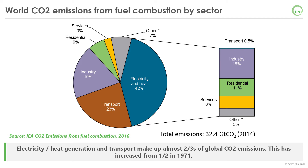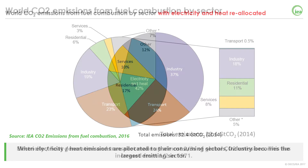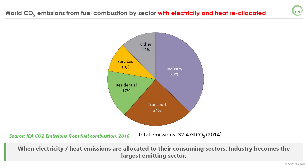However, electricity and heat are generated to meet a demand. You can see the share of electricity and heat demand on the right. Therefore, we can reallocate the emissions of this sector into the respective final consumption sectors. Once reallocated, industry appears to be the largest emitting sector. This can be explained by the very large demand for electricity and heat in industry, which causes remote emissions. We can also notice that the residential and services sector now represents more than a quarter of total emissions.